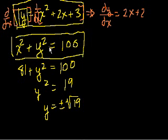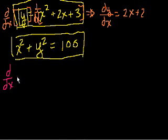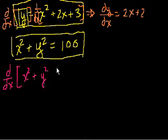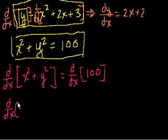So how do we do the same thing for the implicit equation? We apply the derivative operator to both sides — anything you do to one side of an equation you must do to the other. Taking the derivative with respect to x of x squared plus y squared equals 100: the derivative of 100 with respect to x is 0, since it's a constant. The derivative of x squared with respect to x is 2x.